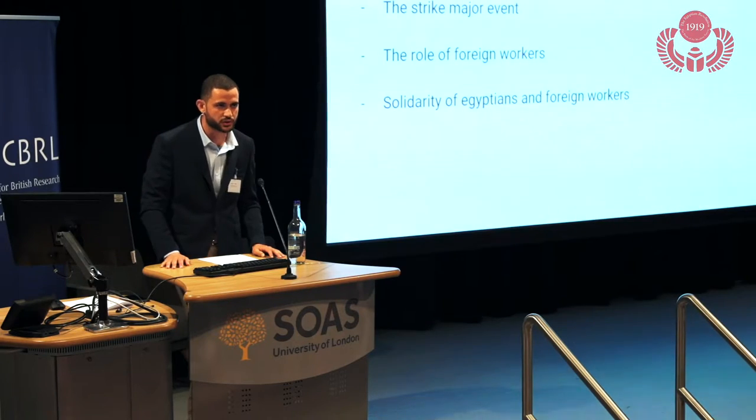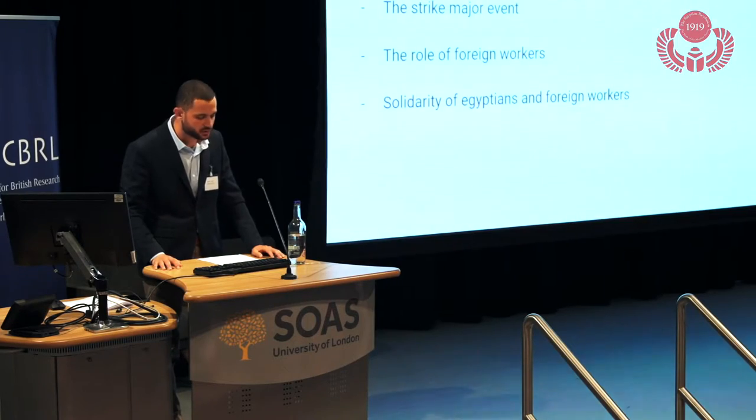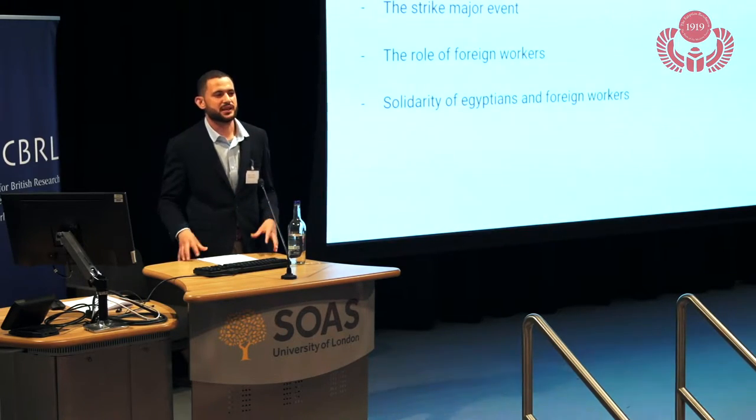What happened in Port Said and Ismailia during the 1919 revolution? When the March revolution started, there were demonstrations in Port Said—seven killed and seventeen injured—and similarly in Ismailia. However, the real escalation happened in May 1919, when the biggest strike in Suez Canal Company history occurred.